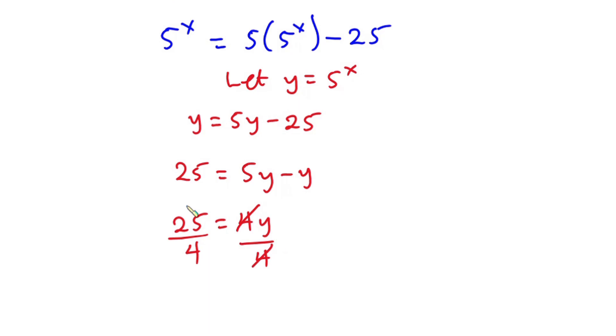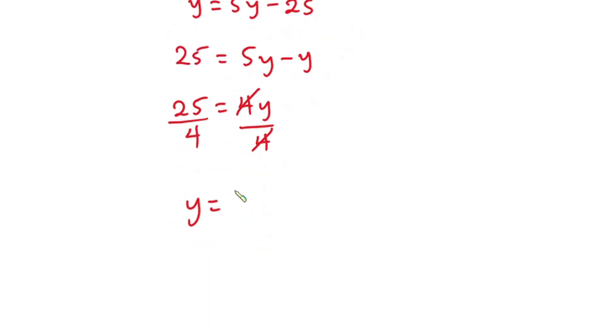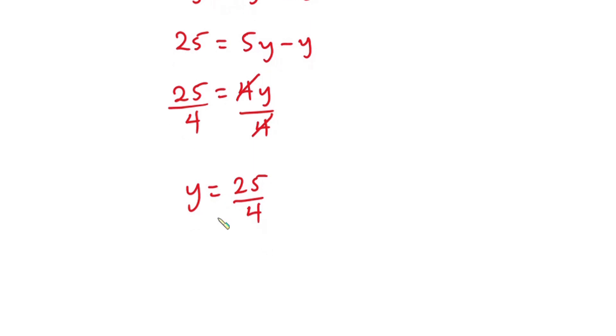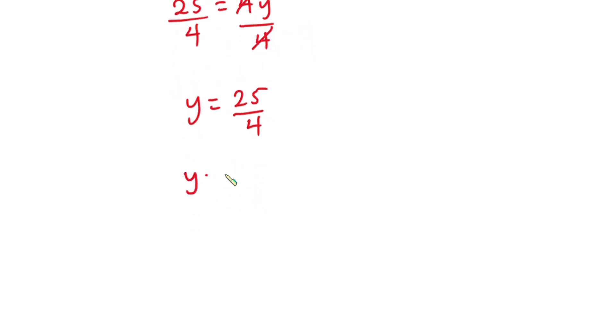Now we have y equals 25 over 4. But initially we let y equal 5 to the power x, so when y equals 25 over 4, we have 5 to the power x equals 25 over 4.